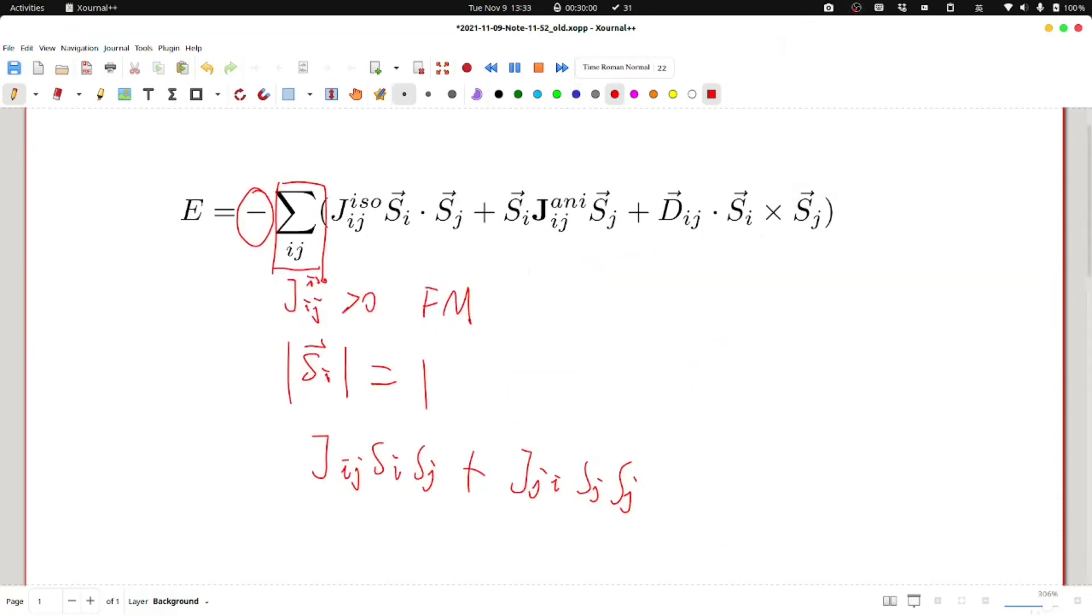In other conventions, sometimes there is no minus sign, sometimes the spins are not normalized, and sometimes they have only one half of this, and sometimes there is a one half ahead of this equation.